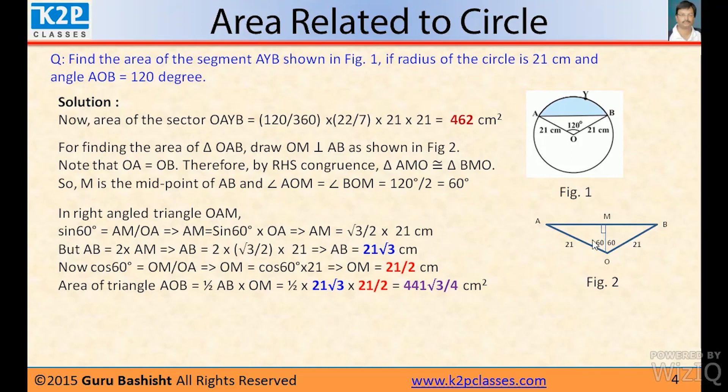So in the right-angled triangle, since this is 60°, sin 60° = AM/OA. So we can find out AM = √3/2 × 21 cm. But AB = 2 × AM. So AB = 2 × √3/2 × 21, which becomes 21√3 cm.